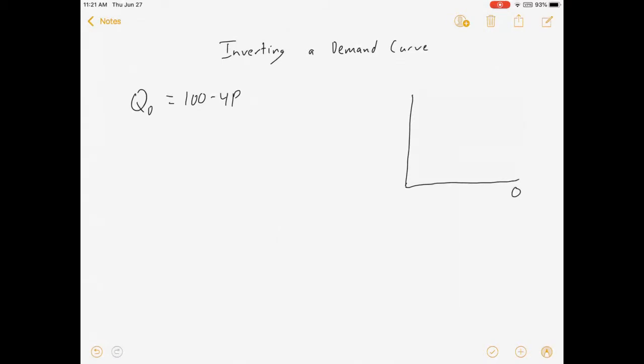But here's the thing. Whenever we graph it, we have P on the vertical axis, meaning P is what's a function of Q, which means that this thing is looking at it in kind of a backwards order.